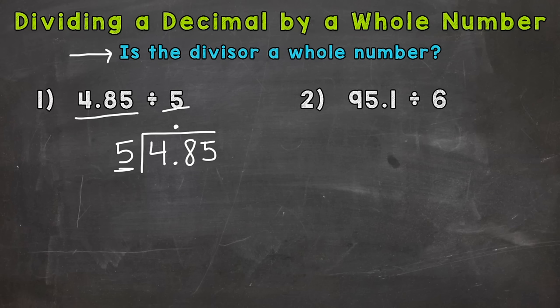So we can start with 4 divided by 5. And we can't divide 4 by 5 and get a whole number. We can't pull any whole groups of 5 out of 4. So we need to jump over to 48. We need to include the 8 here. So we can put a 0 here if we want. So 48 divided by 5. How many whole groups of 5 out of 48? Well, we know 5 times 9 is 45, and that's as close as we can get.